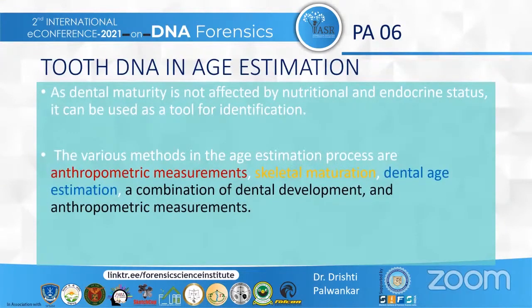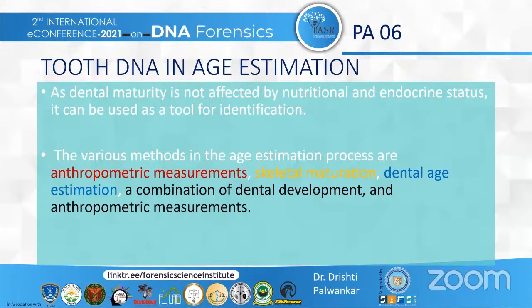Tooth DNA in age estimation: As dental maturity is not affected by nutritional and endocrine status, it can be used as a tool for identification. The various methods in age estimation include anthropometric measures, skeletal maturation, dental age estimation, and a combination of dental development and anthropometric measures. Dental age depends on the chronological age of the patient and is not affected by nutrition — unlike height, which is nutrition-dependent — so dental age corresponds to the individual's actual age.